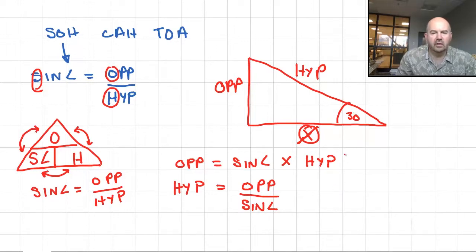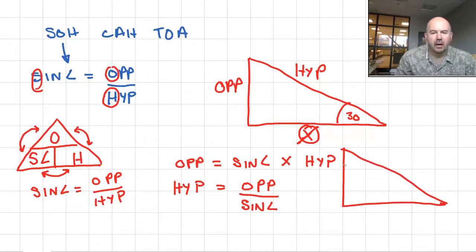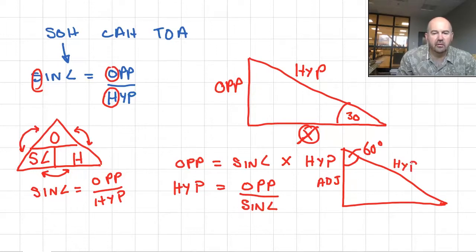The other case might be if I have a triangle where I know a 60-degree angle. Then this becomes the adjacent side, and this is the hypotenuse. The hypotenuse is always straight across from the 90-degree corner — it never changes.